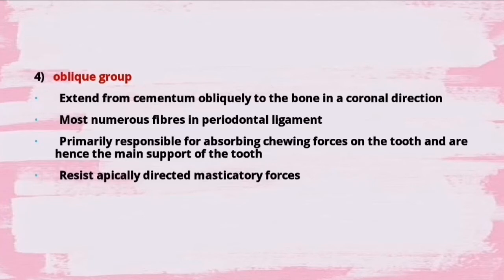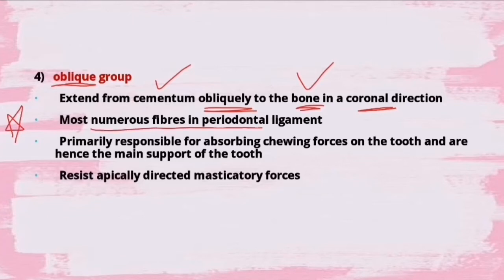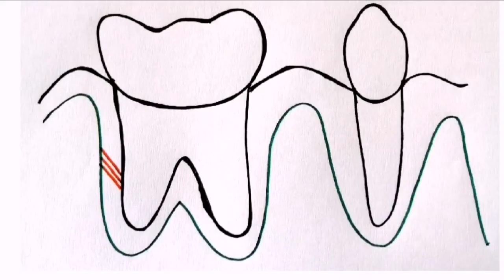The fourth group is the oblique group of fibers. They extend from cementum obliquely to the bone in a coronal direction. They are the most numerous fibers in the periodontal ligament and are primarily responsible for absorbing chewing forces - they are the main support of the tooth. They resist apically directed masticatory forces. In the picture you can see them going obliquely in a coronal direction from cementum to bone.